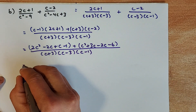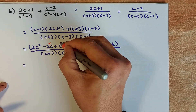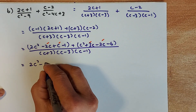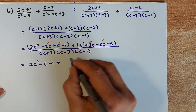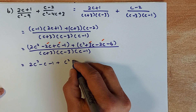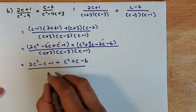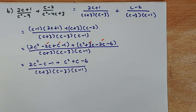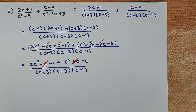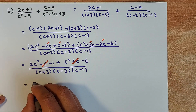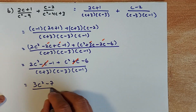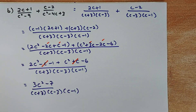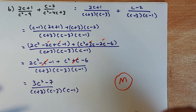Now simplify by collecting like terms. From the first bracket: 2c squared − c − 1. From the second bracket: c squared + c − 6. Adding the like terms: the c terms cancel (−c + c = 0), 2c squared + c squared = 3c squared, and −1 − 6 = −7. The numerator simplifies to 3c squared − 7, with denominator (c + 3)(c − 3)(c − 1). And that, ladies and gentlemen, is a merit in NCEA Level 2.